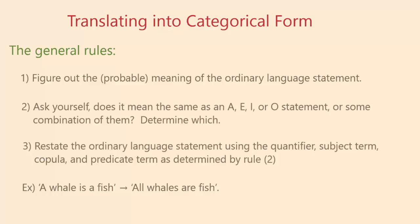First, let's look at some general rules. The first and perhaps biggest rule is to figure out the meaning of the ordinary language statement you are given. Somebody says a statement to you, and what you have to think about is what information is being conveyed by that statement given the context in which it's being stated. While holding that probable meaning in your mind, ask yourself whether it would have the same meaning as an A, E, I, or O statement. Sometimes one statement will actually rely on a combination of them to capture the meaning. You determine which.